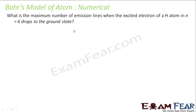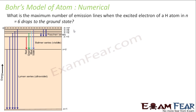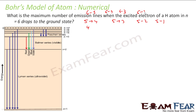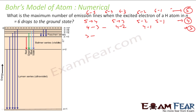What is the maximum number of emission lines when the excited electron of hydrogen at n equal to 6 drops to ground state? From 6 it can go to 5, 6 to 4, 6 to 3, 6 to 2, 6 to 1 — that is 5 options. From 5th it can go to 4 possible options: 5 to 4, 5 to 3, 5 to 2, 5 to 1. From 4th: 3 possible options. From 3rd it can go to 2 or to 1 — 2 possible options. From 2nd it can go to 1 — only 1 possible option. Adding all: 5 plus 4 plus 3 plus 2 plus 1 you get 15.